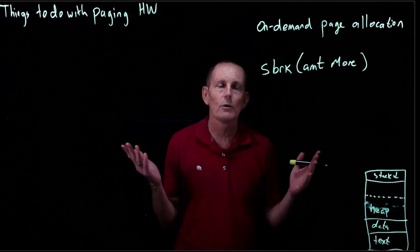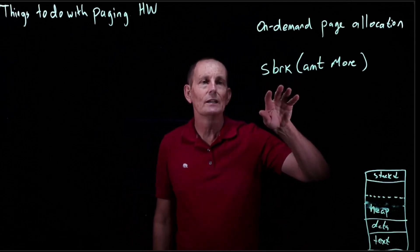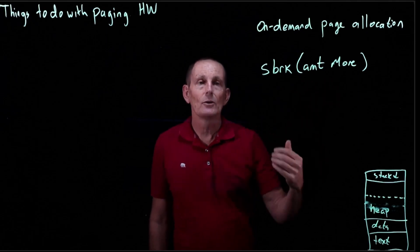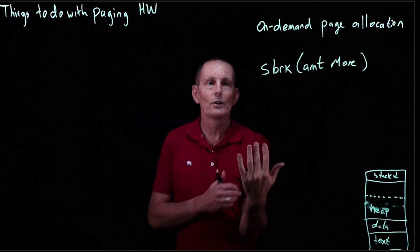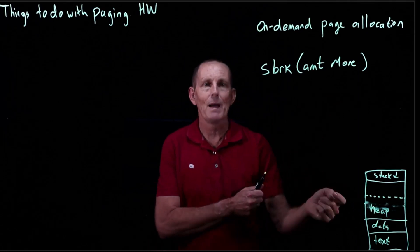And the simple and straightforward way to do that is when the user calls S-break, we figure out how many more pages are going to be needed for the heap. We go ahead and allocate physical pages for each of those desired pages and map them in.